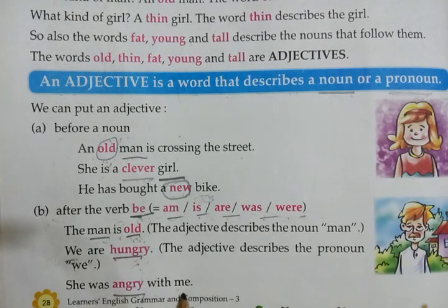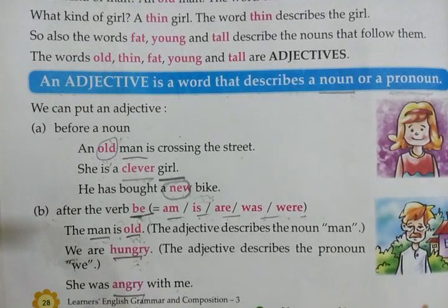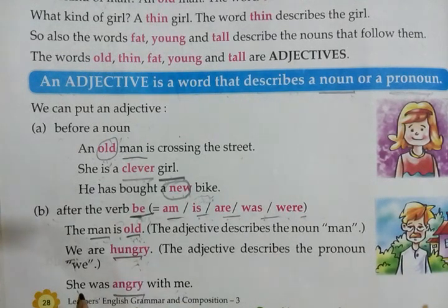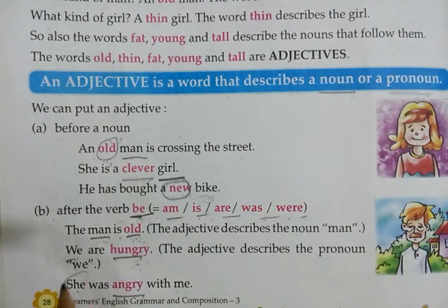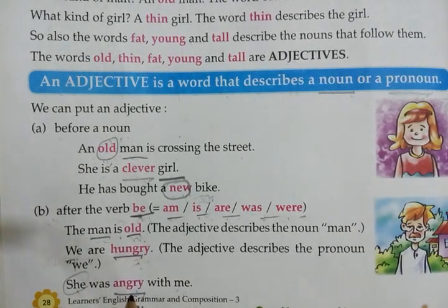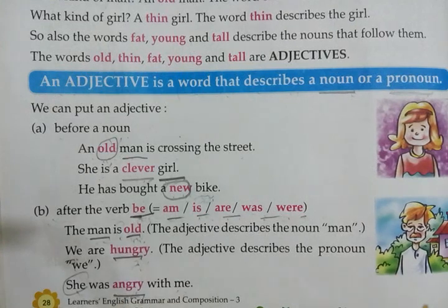'She was angry with me.' She is pronoun — woh kaisi hai? Angry, krodhit. Angry describes she, so angry is adjective.